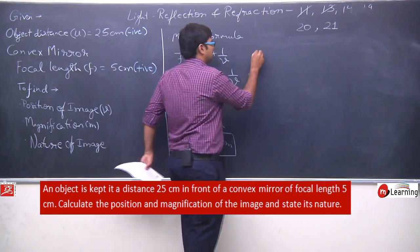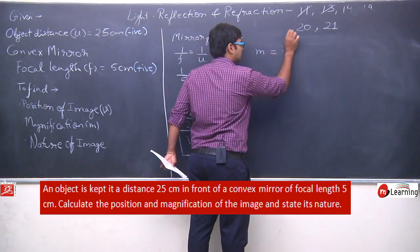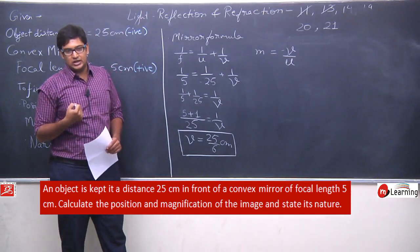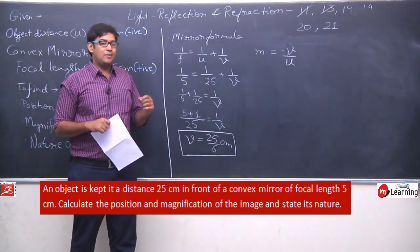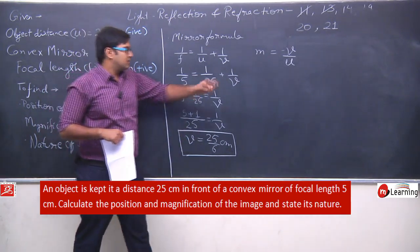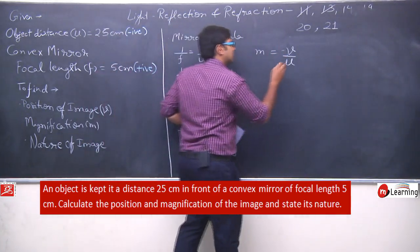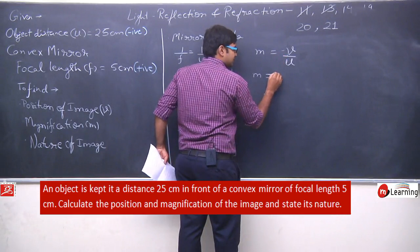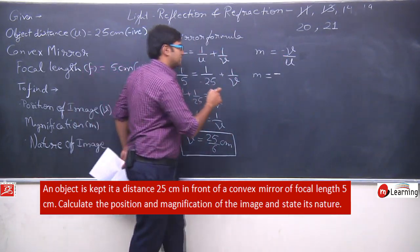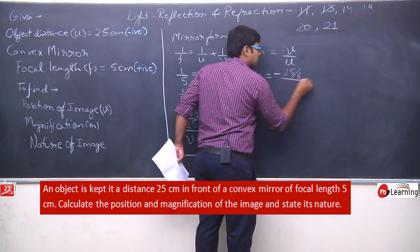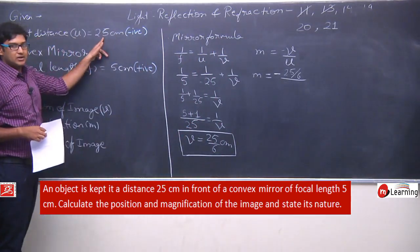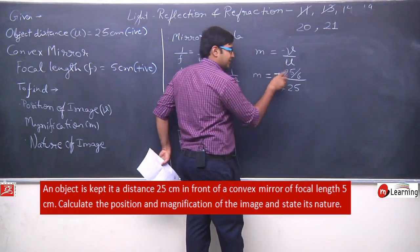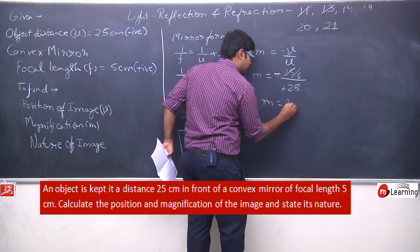Can we also calculate the magnification? Yes. Magnification: m = −v/u. Here we have image distance and object distance given. Substituting: m = −(25/6) / (−25). The negatives cancel, and 25/25 = 1, so m = 1/6.